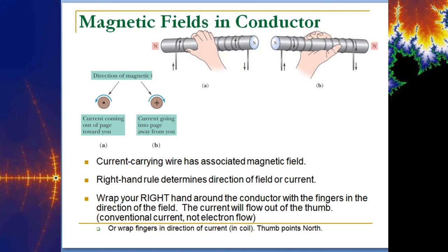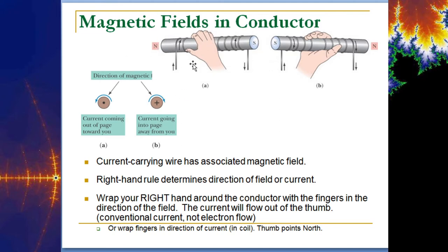If we look at a current-carrying wire — any kind of conductor carrying current — we can describe the direction of current going into the page or out of the page. These are the conventions used a lot of times when you see motor diagrams. A current-carrying wire has an associated magnetic field. You can see the wire being wrapped around in a circle, and even without a voltage source, a current is being generated in this coil of wire because of a nearby magnet.